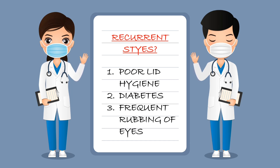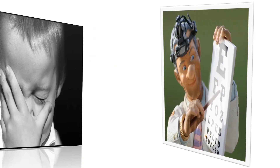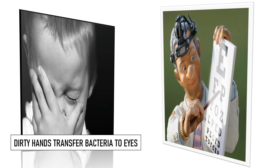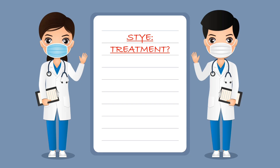Another reason for recurrent styes, especially in children, is frequent rubbing of the eyes. Sometimes when children cannot see clearly, they rub their eyes hoping it will clear their vision. Their hands may be dirty, transferring bacteria from their hands to their eyes and leading to the formation of a stye. So if your child is getting recurrent styes, there is a possibility that their eyesight may be weak and they need a more detailed checkup.